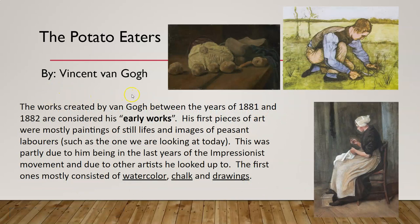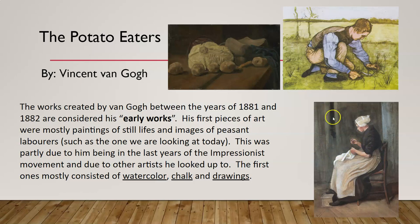The works created by Van Gogh between the years of 1881 and 1882 are considered his early works. When you only have 10 years to work with, you pick the first couple as early works. His first pieces of art were mostly paintings of still lifes and images of peasant laborers, such as the one we're looking at today. This was partly due to him being in the last years of the Impressionist movement and due to other artists he looked up to. The first ones mostly consisted of watercolor, chalk, and other drawings.